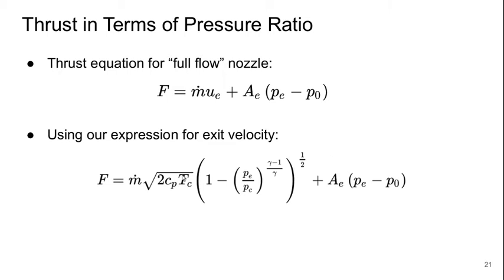So this is sort of nice because it means we don't actually have to explicitly calculate the exit velocity. All we have to know is the mass flow rate, the combustion chamber properties, the gas properties, and then the exit pressure and the atmospheric pressure and the exit area.